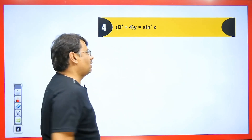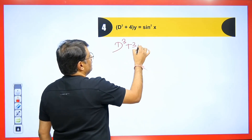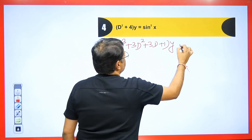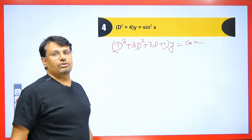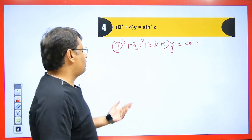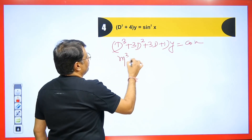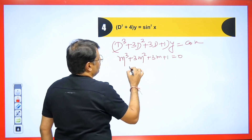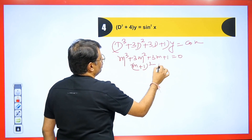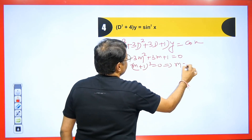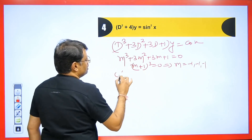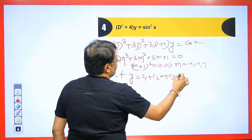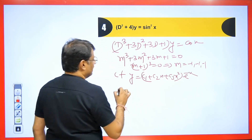Now suppose the question is (D³ + 3D² + 3D + 1)y = cos x. For CF: m³ + 3m² + 3m + 1 = 0, which factors as (m + 1)³ = 0, so m = −1, −1, −1. Thus CF: y = (c₁ + c₂x + c₃x²)e^(−x). Now let's find the PI.